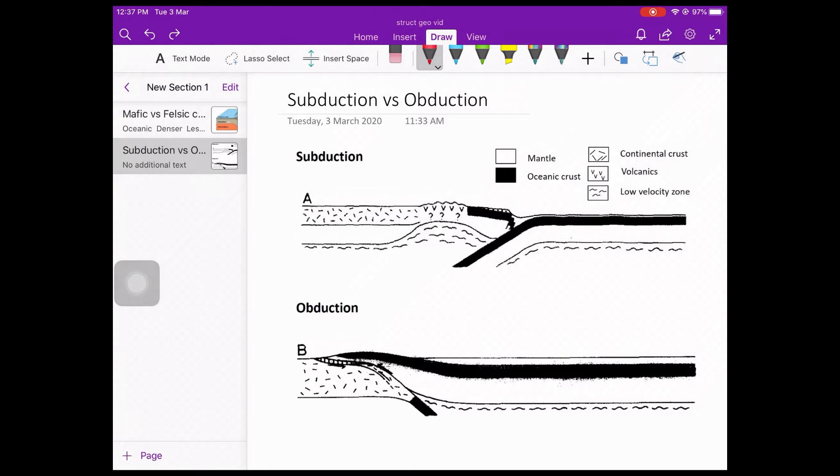Note that obduction is different from subduction. In subduction, the oceanic crust is subducted beneath the continental crust into the Earth's mantle, whereas in obduction, the oceanic crust is thrust above the continental crust.